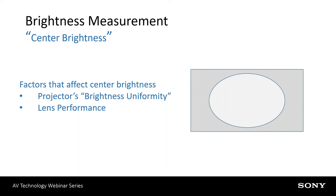Brightness across the breadth of the image will change somewhat based on the imager technology, the projector, the lens, and a lot of other things. Average brightness or ANSI brightness versus center brightness — one is not necessarily better than the other, and one isn't trying to be misleading. It's just a different way to compare projectors. For a lecture hall doing PowerPoint, center brightness is probably a good comparison. Conversely, for installations with multiple projectors blended together, ISO brightness gives a better comparison side by side.